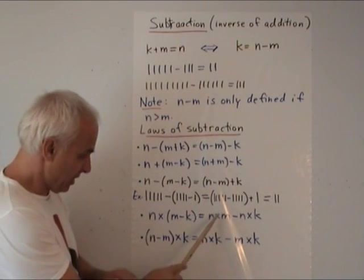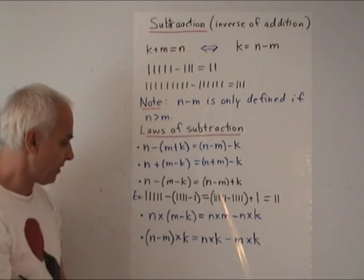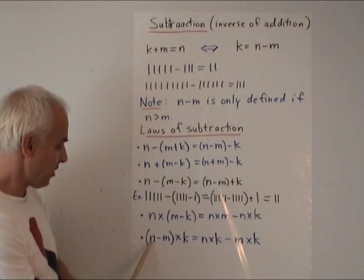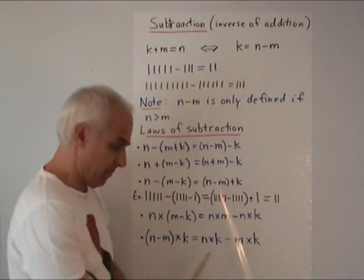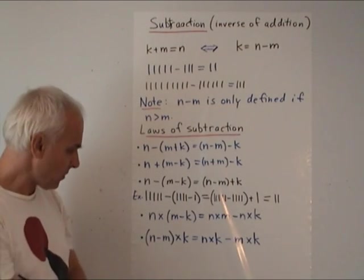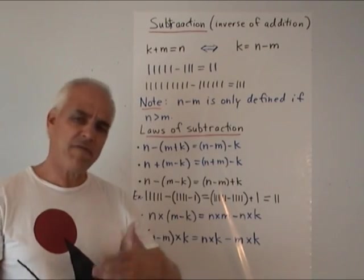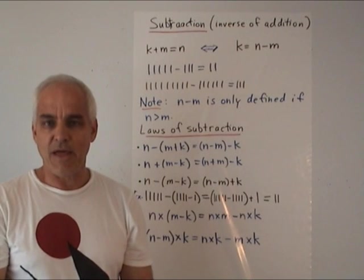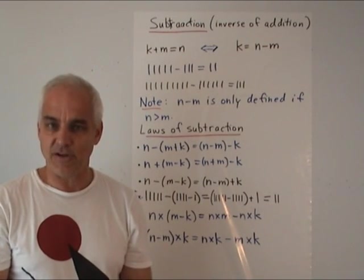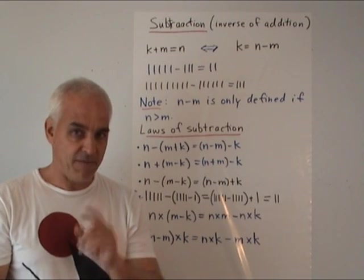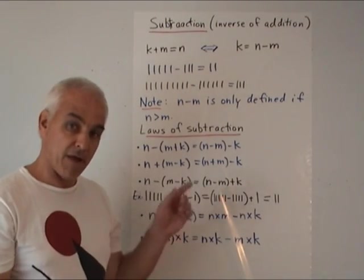Then two distributive laws: N times (M minus K) equals N times M minus N times K. We use the same convention as for addition — multiplication takes priority over minus. The other one: (N minus M) times K equals N times K minus M times K. The proofs for these laws are very much in the same spirit as the laws for addition and multiplication that we've already looked at in previous videos, so I'll leave that to you.